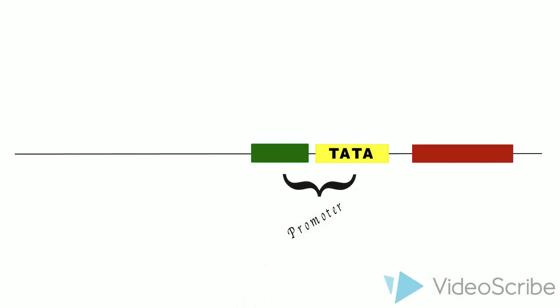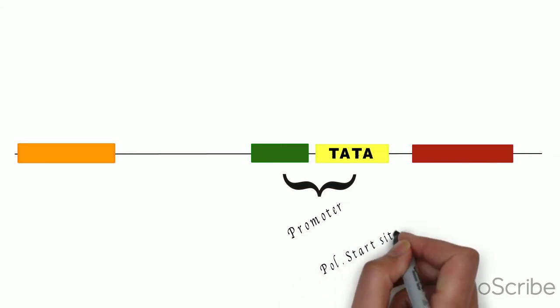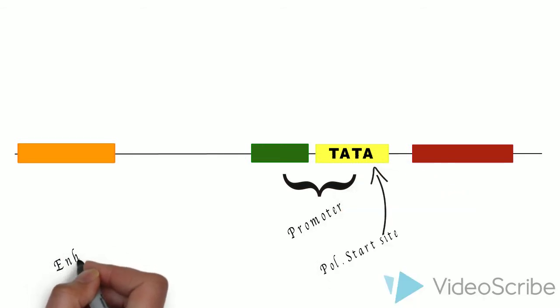We still have the TATA box, but the RNA polymerase can't bind to it on its own, so it needs another section of the promoter. This is where the transcription factors can bond.